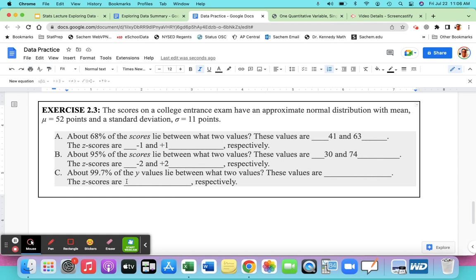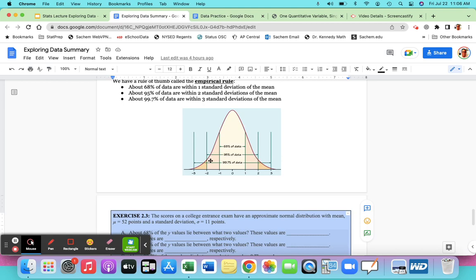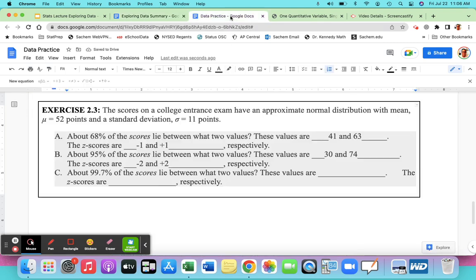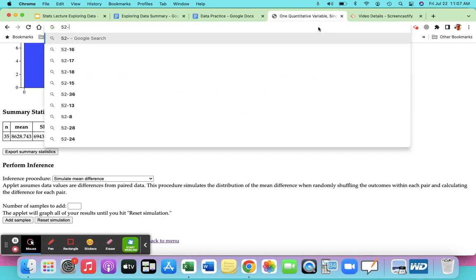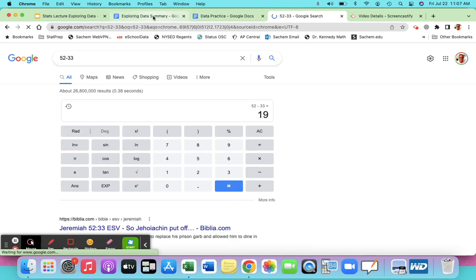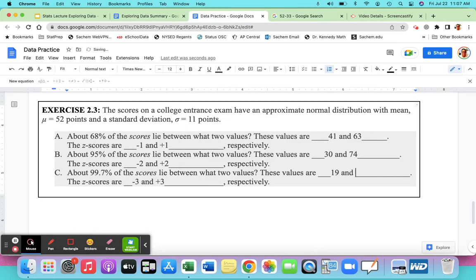And then the last one, 99.7% of the scores are between what two values? So 99.7% is that last boundary here. 99.7% is three standard deviations below, minus 3 to plus 3. So those are the z-scores. Minus 3 to positive 3. What I have to do is subtract 3 times 11 and add 3 times 11. So 33. So subtract 33. What's 52 minus 33? 19. I could have done that in my head, but why not use technology? And then add 33. So what does that give you? 85. Addition's a little bit easier. But don't be overconfident. Use a calculator if you're not sure.